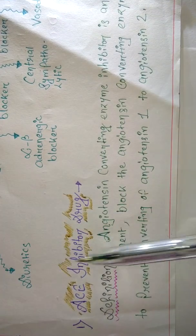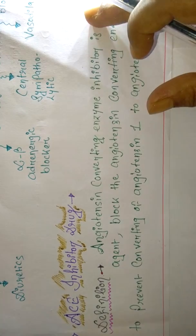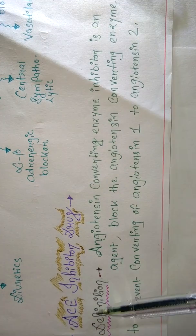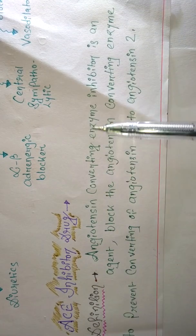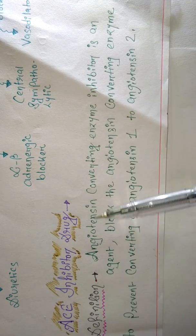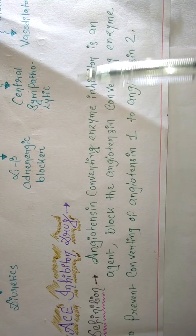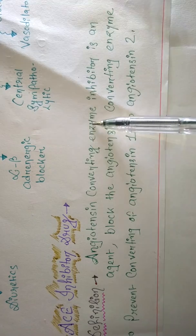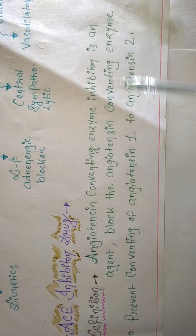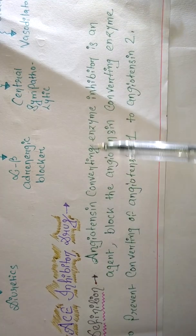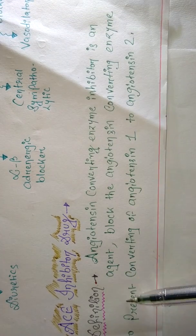Let's start with ACE inhibitors, the first one. First, write the definition of ACE inhibitors. ACE stands for angiotensin converting enzyme. ACE inhibitor — inhibitor means to stop — is an agent that blocks the angiotensin converting enzyme to prevent the conversion of angiotensin 1 to angiotensin 2.